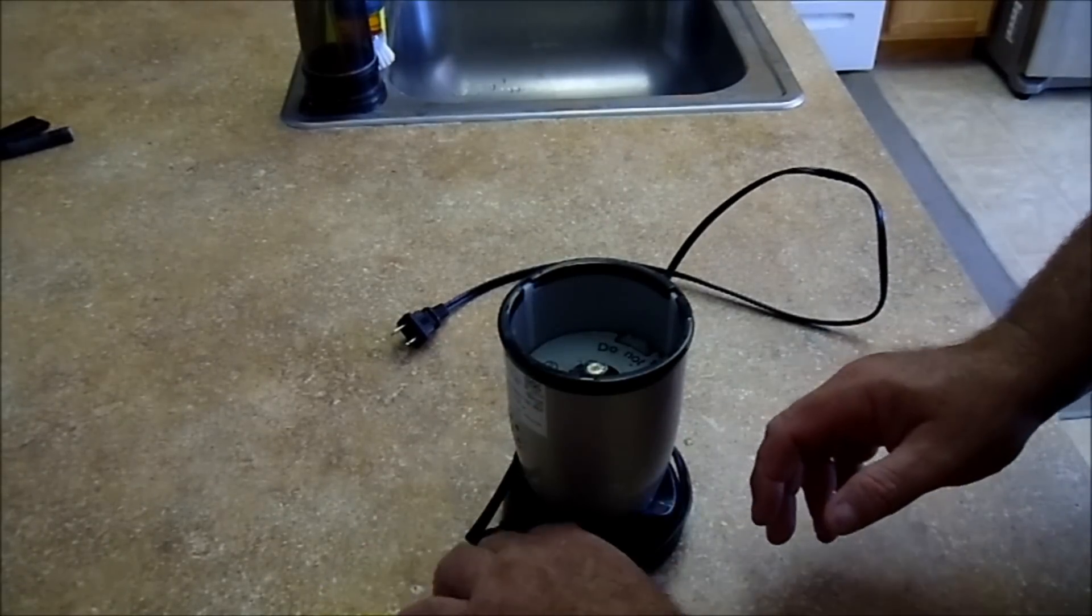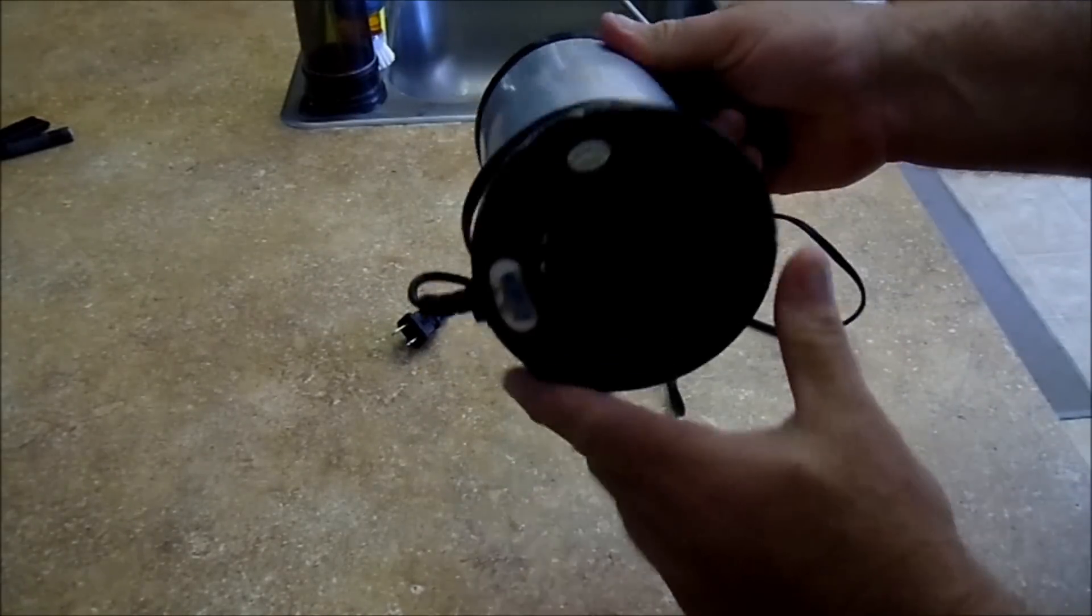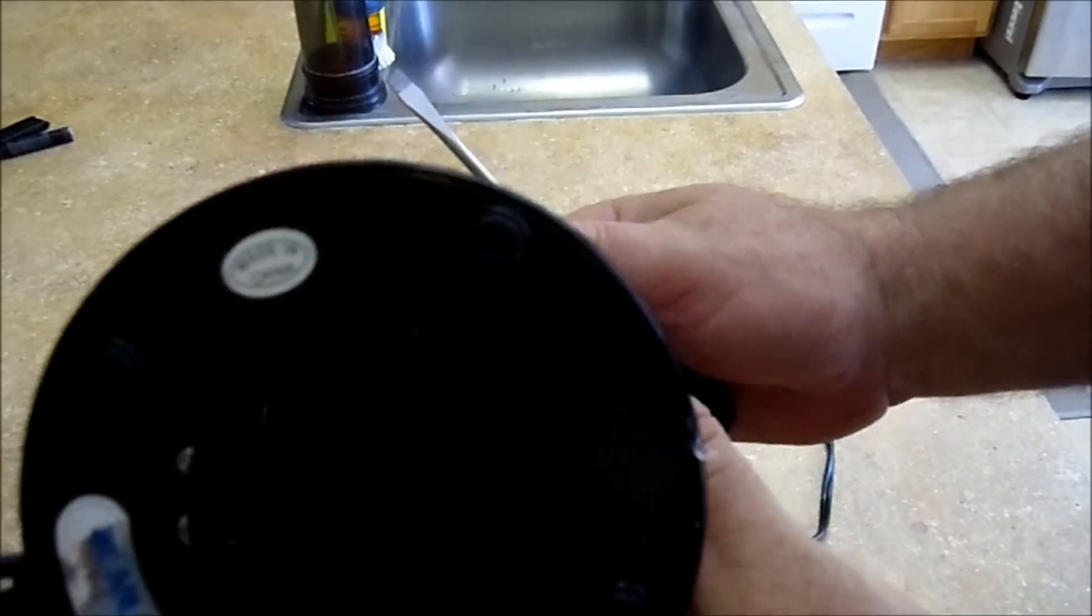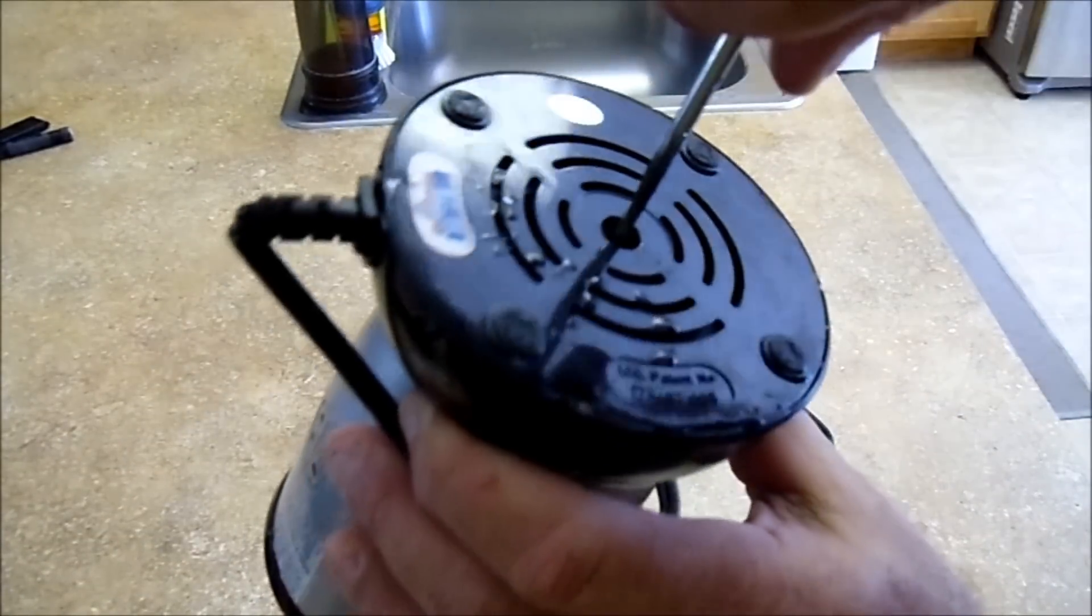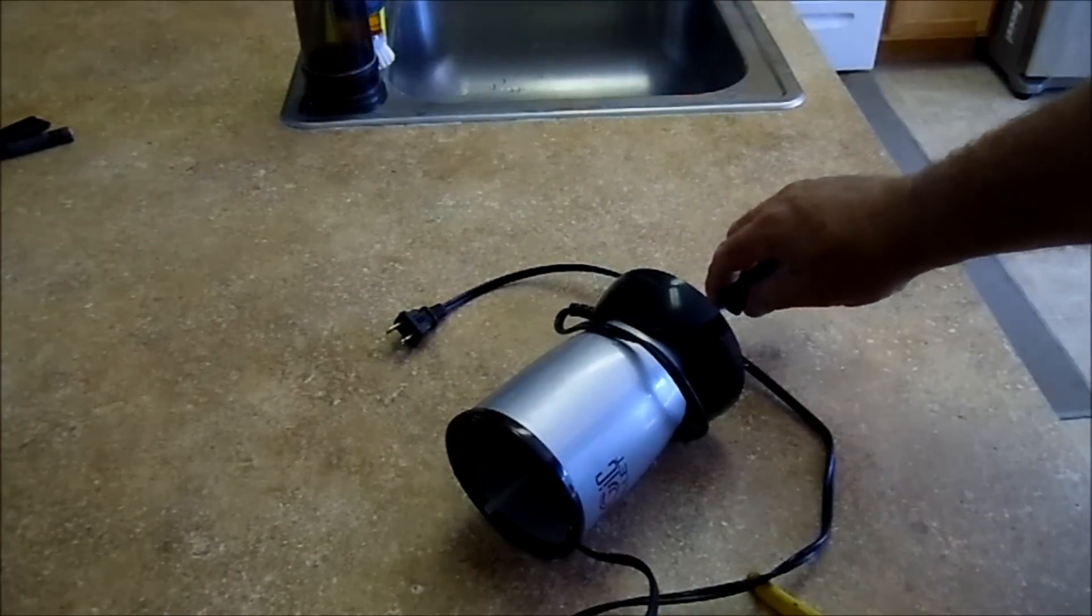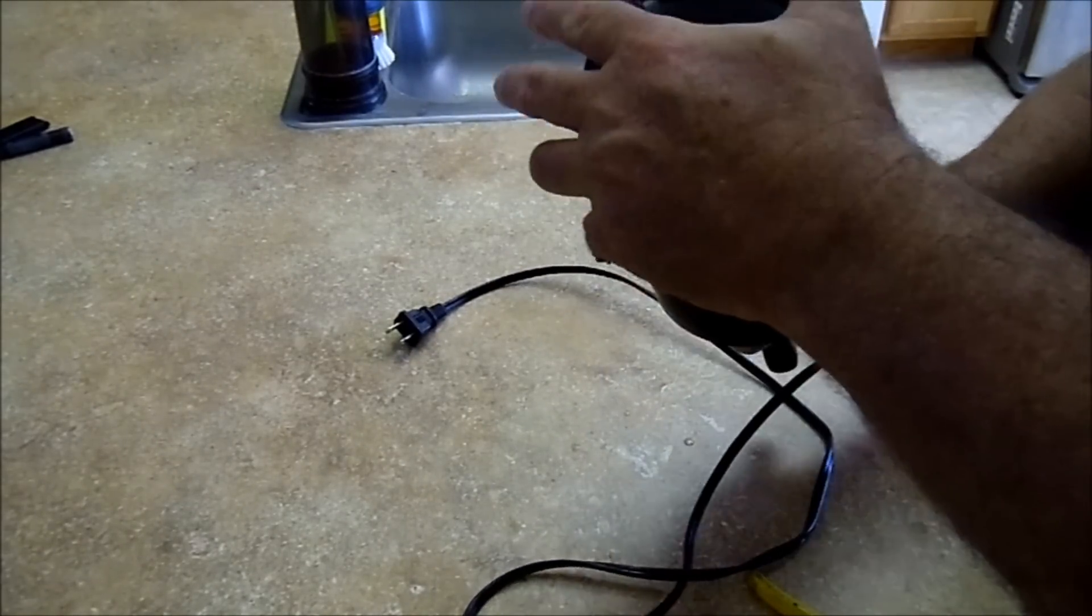All you need is a small flathead screwdriver and a pair of needle nose pliers. There's a screwhead on the bottom here, there's a flathead screw right in the middle. You're going to put your screwdriver on that and you want to turn this clockwise.